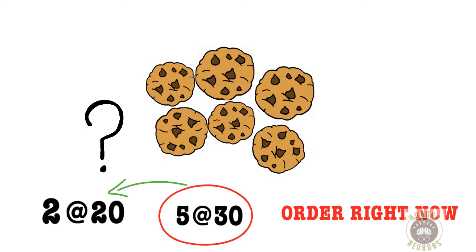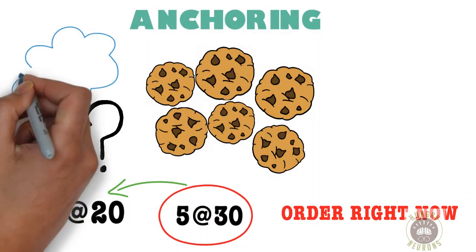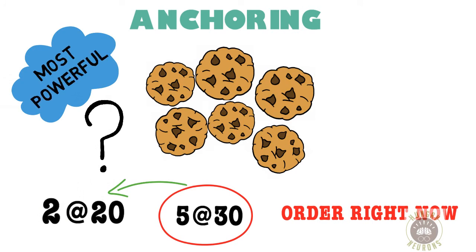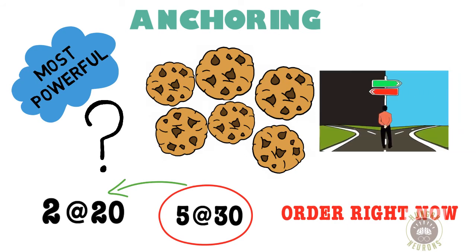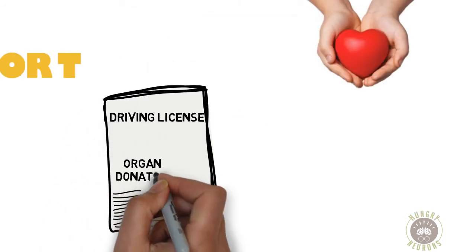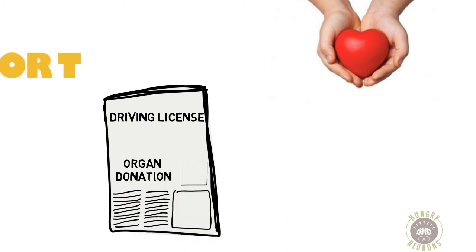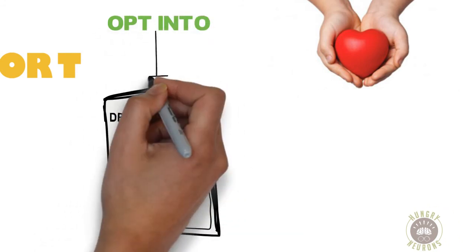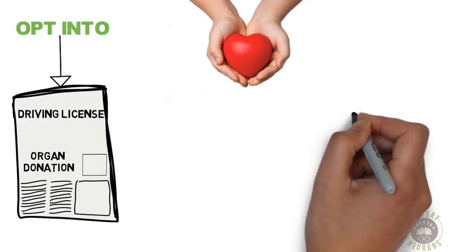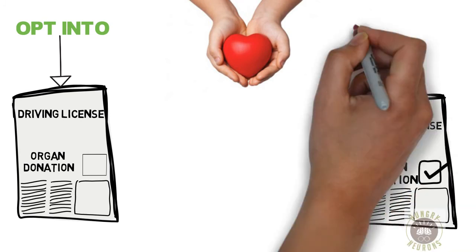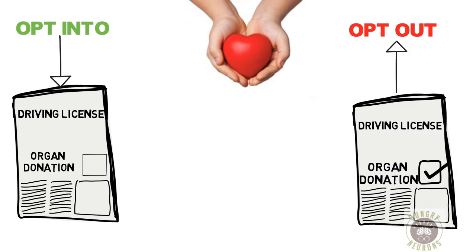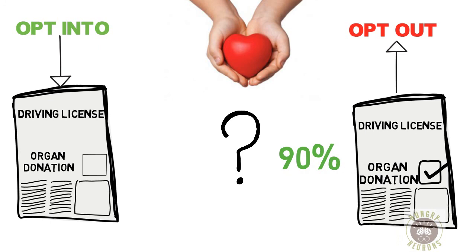This process is called anchoring, and it is one of the most powerful and well-established behavioral principles. Using this strategy you can influence the decisions people make without actually forcing them to make any particular decision. For example, in some European countries the organ donation checkbox on a driver's license is unchecked by default — citizens opt in if they wish. In other countries it is checked by default — citizens opt out if they wish. The proportion of donation is 90% in one case and a mere 18% in the other. The 90% figure belongs to the country where the field is checked by default.